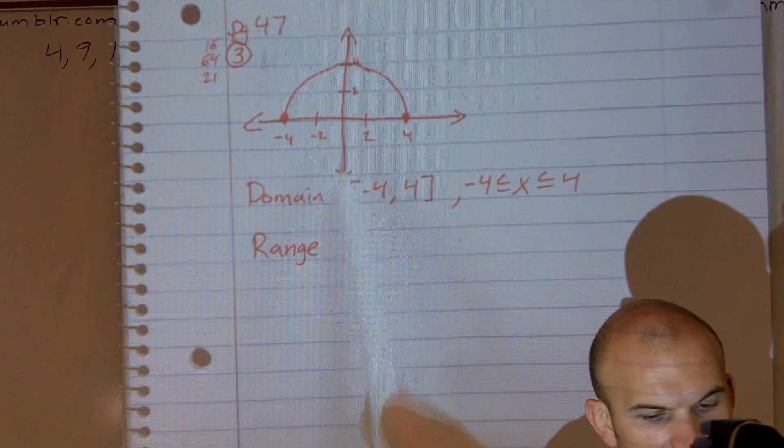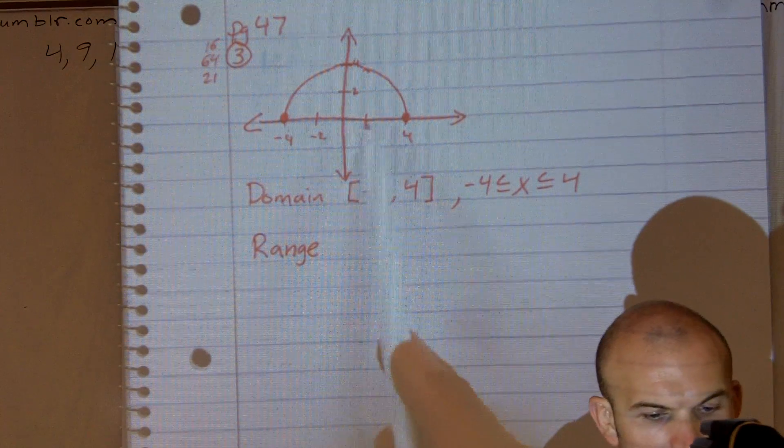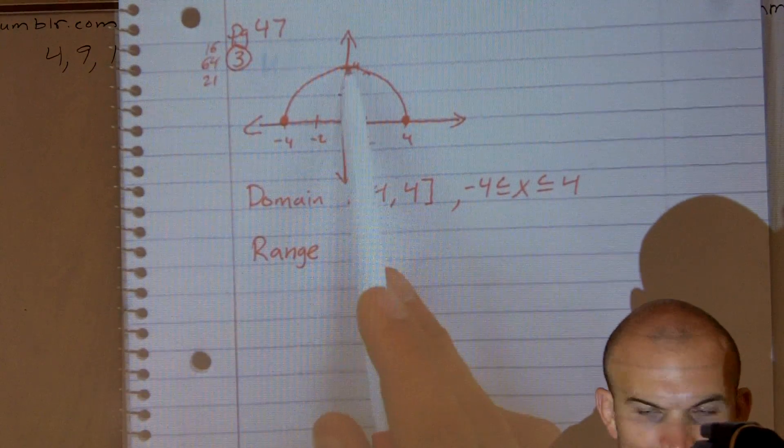Well, if you look, there's no negative values for my y, right? Nothing in the graph is negative for y. So it goes from 0 up to 4.